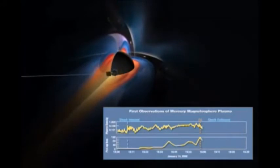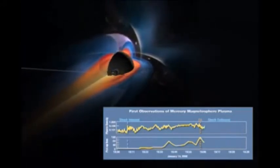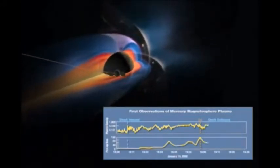the solar wind dynamic pressure at Mercury's orbit on average is also a factor of 3 larger than that at Earth.